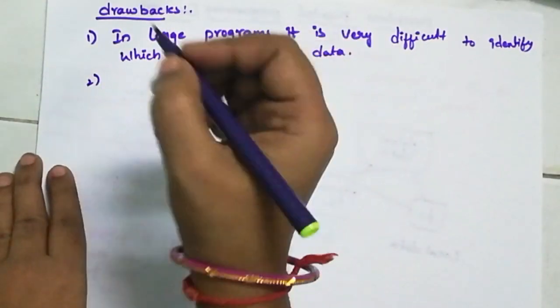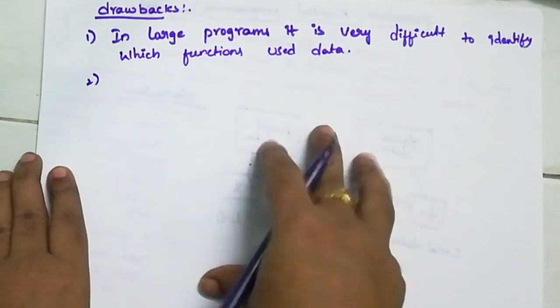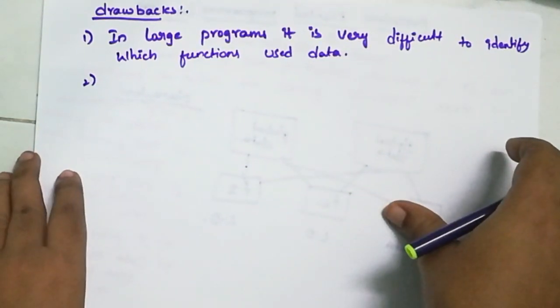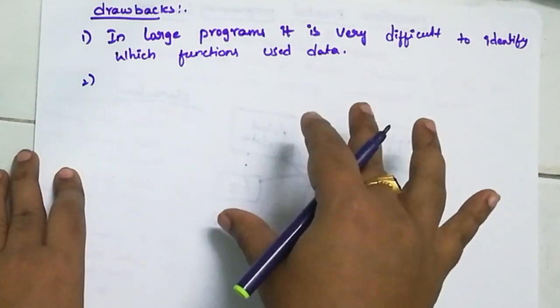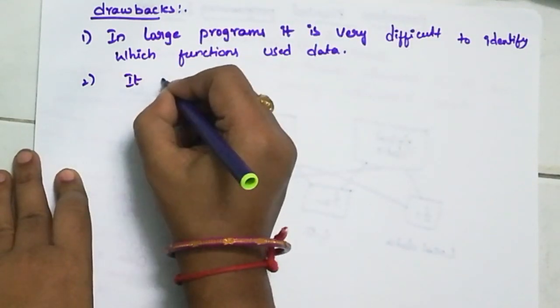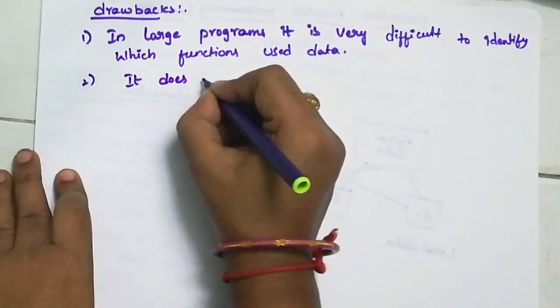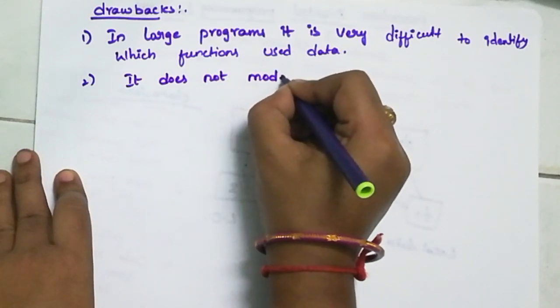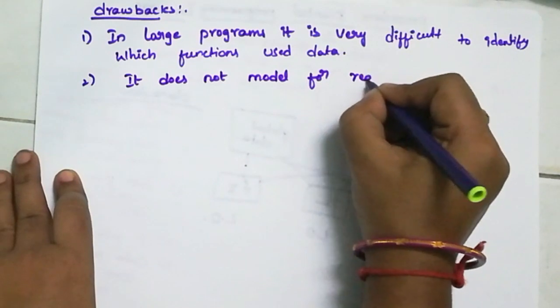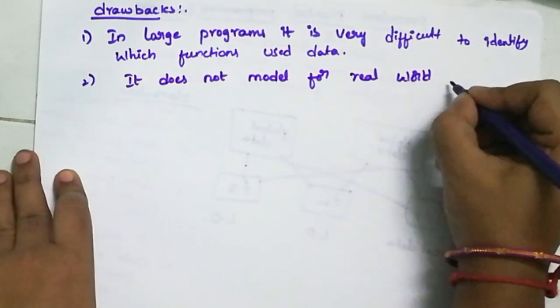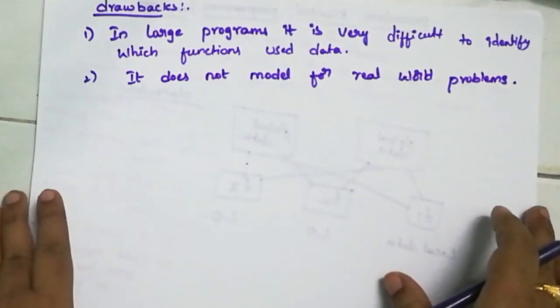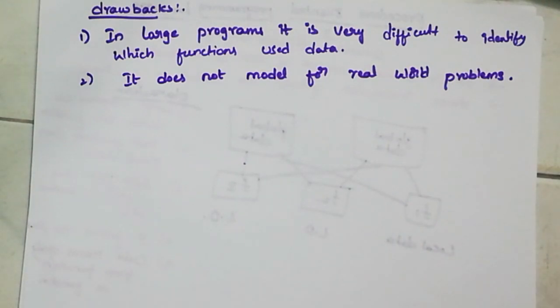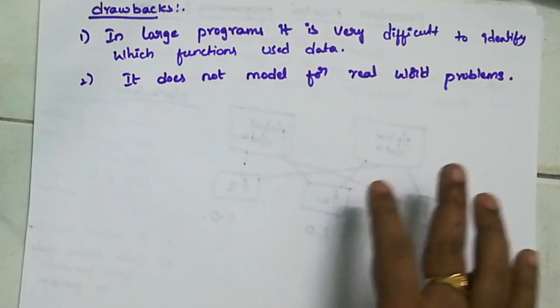Next, second point. Now present real-time systems, any systems, any programming, any tasks we can support. And it does not model for real-world problems. So based on this, we cannot access entire present tasks. This is also difficult. So these two drawbacks - to access present systems, we designed object-oriented programming language.